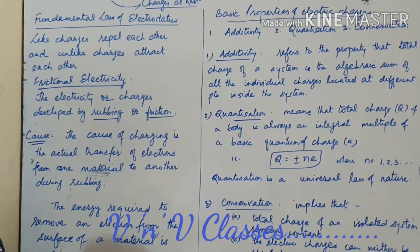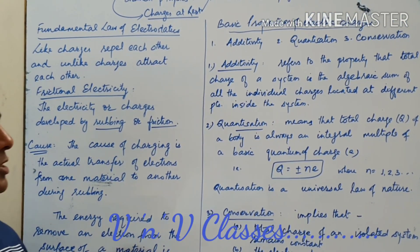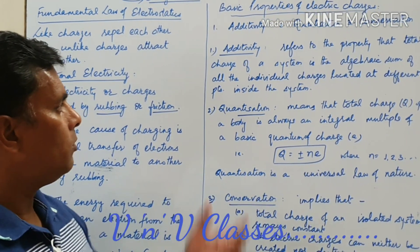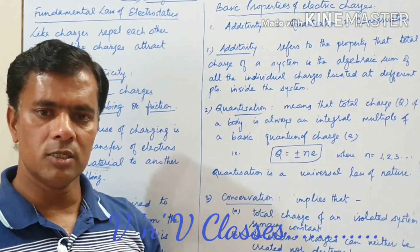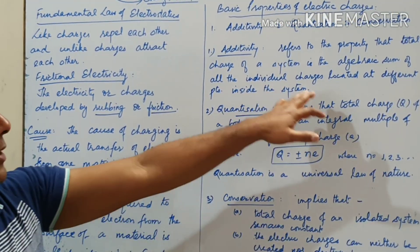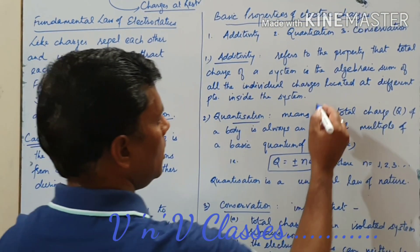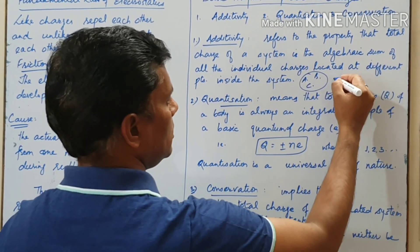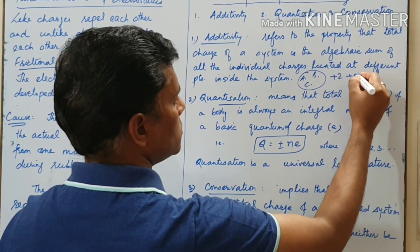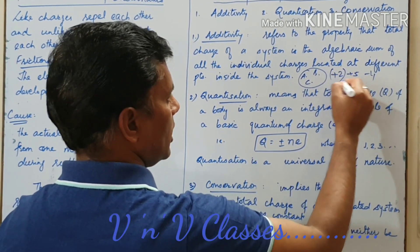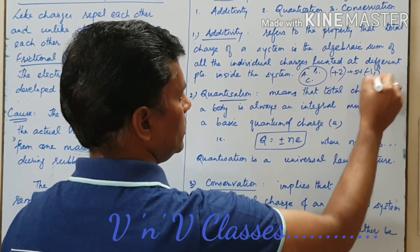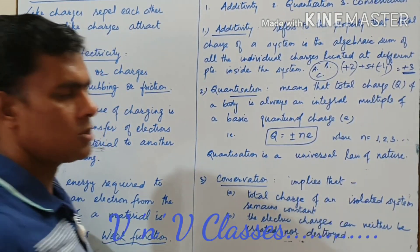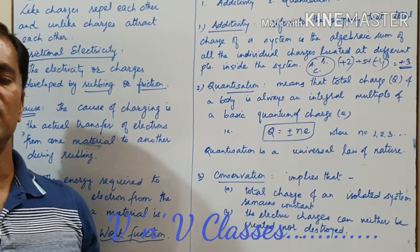Now what is additivity? It refers to the property of the charges that the total charge of a system is the algebraic sum of all the individual charges located at different points inside the system. Say for instance, a body has got three charges say A, B, and C which are plus 2, plus 5, and minus 4. So total charge will be the sum of these that comes out to be plus 3 units of charge. Simple algebraic addition.